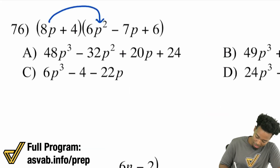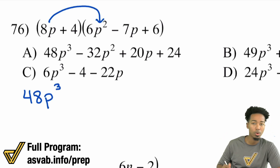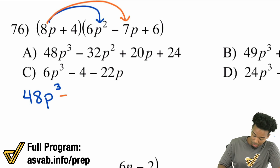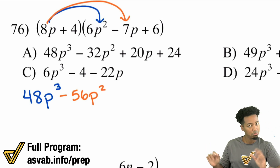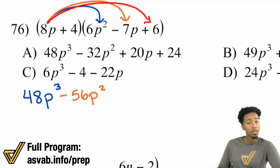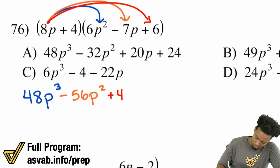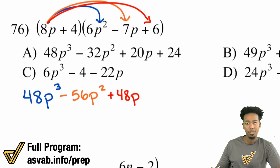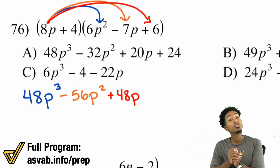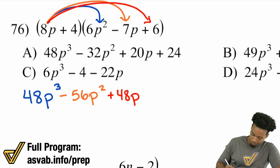Let's get started. 8p times 6p²: 8 times 6 is 48, p times p² is p³. Number two: 8p times negative 7p — negative times a positive is negative, 8 times 7 is 56, p times p is p². Next up: 8p times positive 6 — 8 times 6 is 48, and there's just a p left. Even though the other term didn't have a variable, it just stays as p.